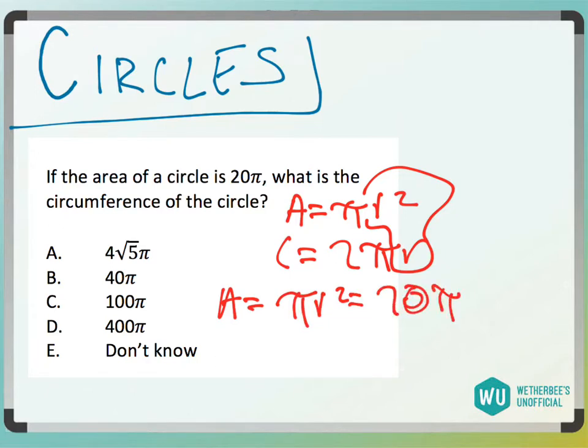I'm going to divide this π out - divide by π - I'm going to get r² is 20. Then to undo this square, r is √20.